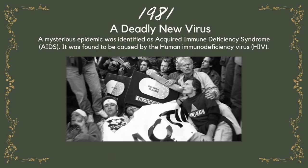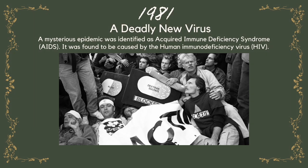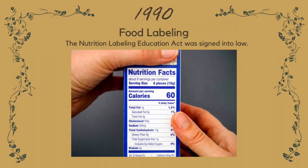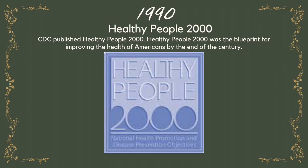1981 — A deadly new virus. A mysterious epidemic was identified as Acquired Immune Deficiency Syndrome, AIDS. It was found to be caused by the Human Immunodeficiency Virus, HIV. 1990 — Food Labeling. The Nutrition Labeling Education Act was signed into law. 1990 — Healthy People 2000. The CDC published Healthy People 2000, the blueprint for improving the health of Americans by the end of the century.